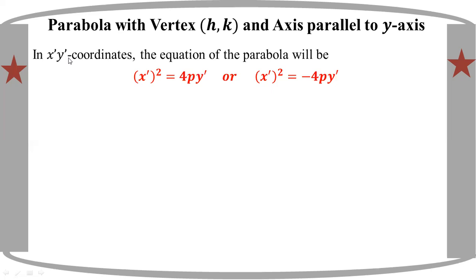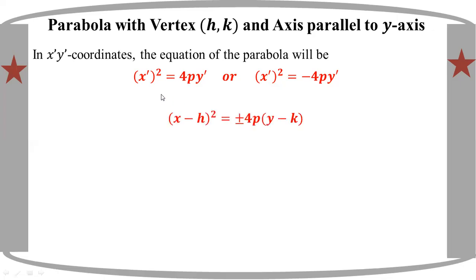The coordinate system at the same time has points 0,0 and h,k. The equations are: x-prime squared equals 4p y-prime, or x-prime squared equals minus 4p y-prime. The coordinate system gives x-prime squared equal to minus x.